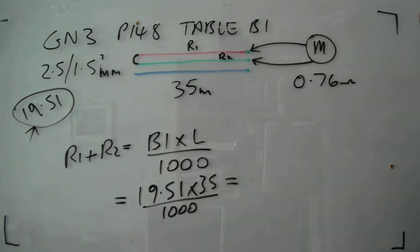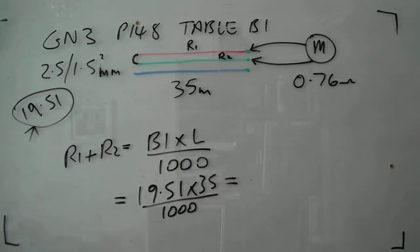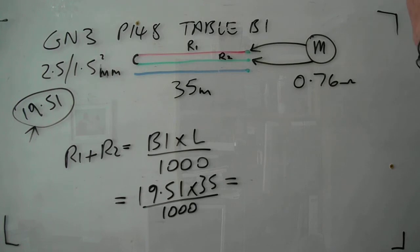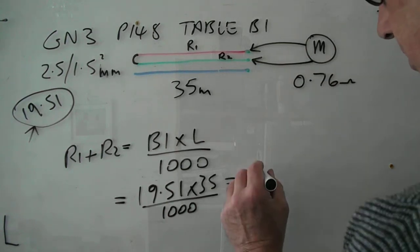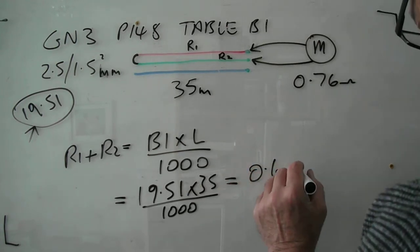And that should come to, if you do that on your calculator, 19.51 times 35 divided by a thousandth equals 0.68 of an ohm.